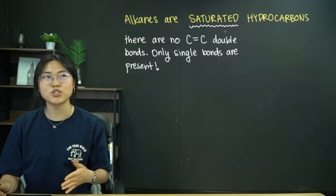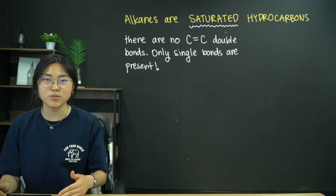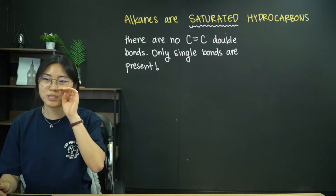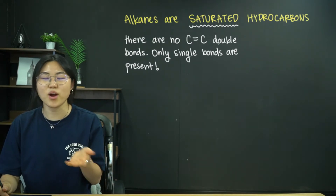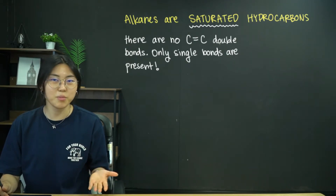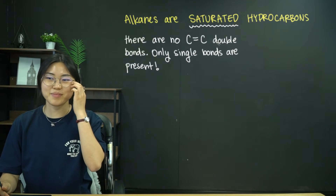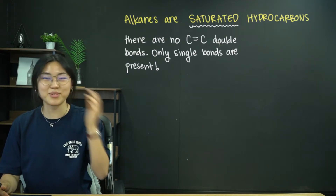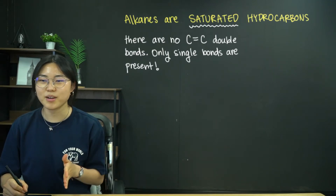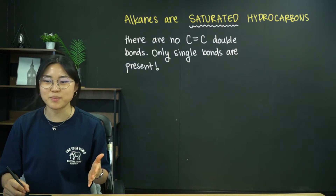Often when you talk about saturated solutions, it means you cannot add any more solute into that solvent because it is saturated. Similarly, you basically can't add any more hydrogens into this compound because it doesn't have any double bonds that you can break and then add hydrogens into. You will get to that reaction — hydrogenation. But yeah, there are no carbon-carbon double bonds; there are only single bonds.